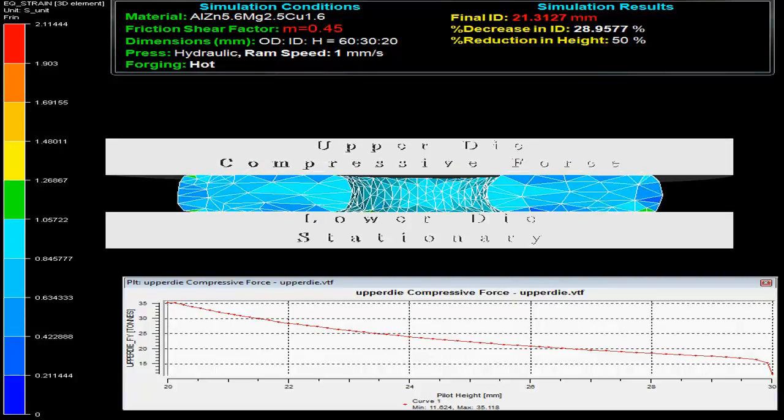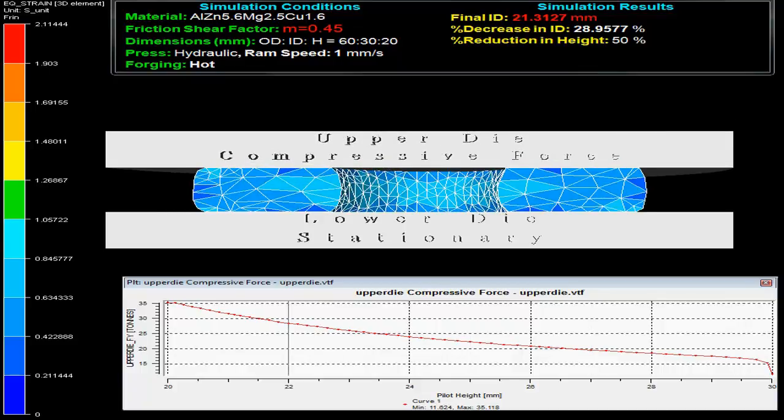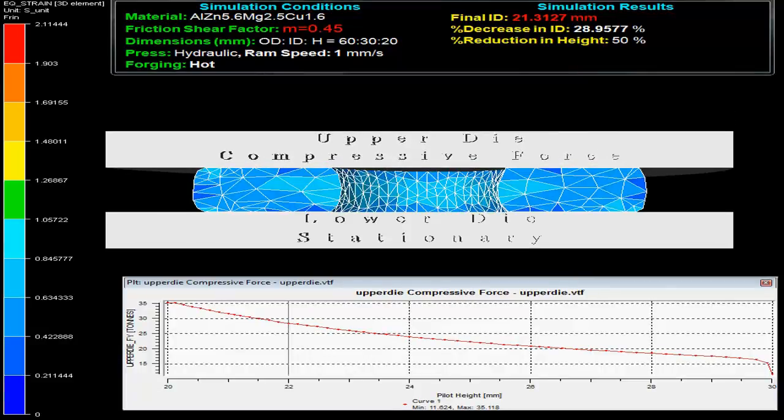At the bottom, the graph between force on upper die versus part height is shown. The equivalent strain generated during the process can be compared with the help of the scale given on the left side.